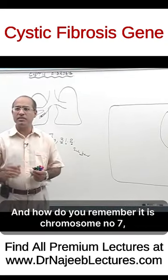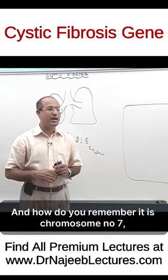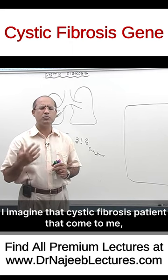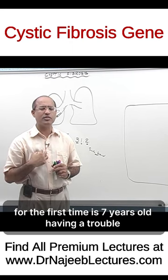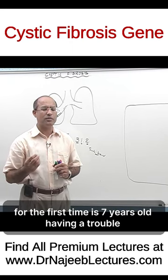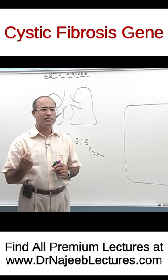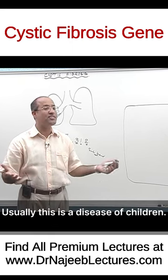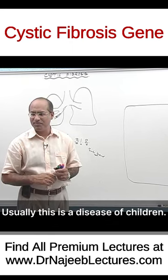And how do you remember it as chromosome number 7? I remember it by this: I imagine that the cystic fibrosis patient who comes to me for the first time is 7 years old — chromosome number 7. Usually this is a disease of children.